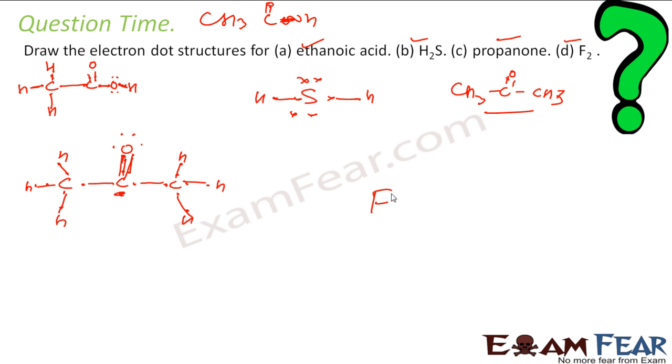Similarly, F2. Fluorine has 7 electrons. So they need to share 1 electron. When they share 1 electron, this fluorine feels it got 8 because 7 it has, 1 it got from sharing, and this fluorine had 7, 1 it got from sharing.